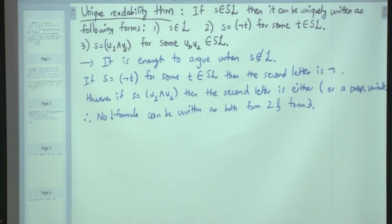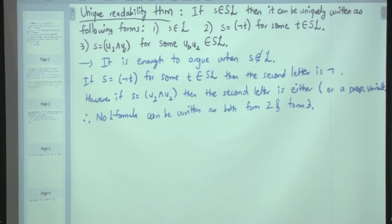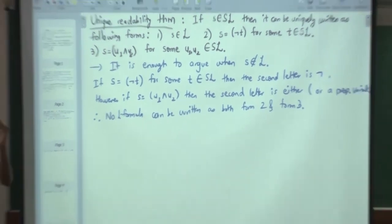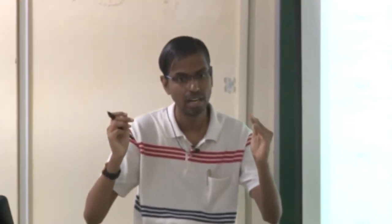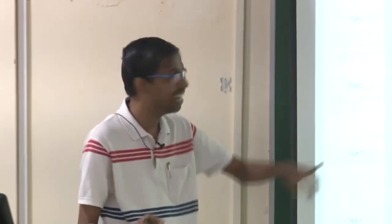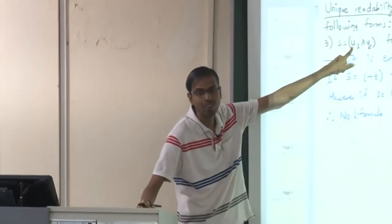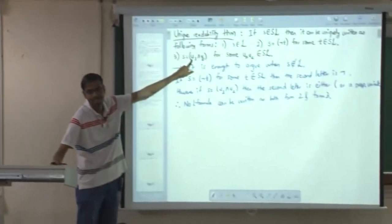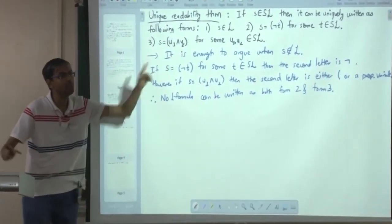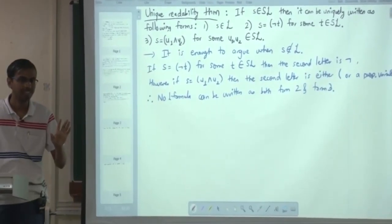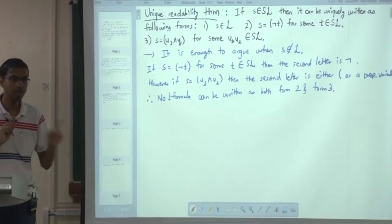A student asks: suppose U1 is also negation of something. Even if it is negation, after the negation we put a parenthesis. So the third letter would be negation, but the second letter in that case will always be the open parenthesis. Whereas in form 2 the second letter is negation. So therefore they are going to be different.